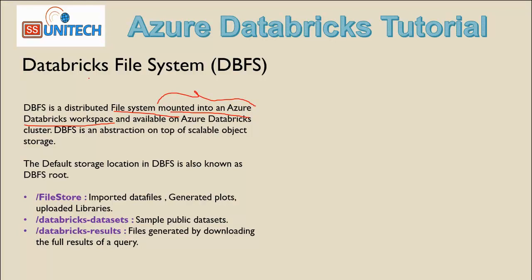The default storage location in DBFS is also known as the DBFS root. Inside the root we will see three folders. First is the FileStore, second is the Databricks dataset, and third is the Databricks result. These three folders are created by default when creating Databricks. We will be able to see only the first one — the FileStore — inside the UI. The last two folders are not visible directly inside the UI.